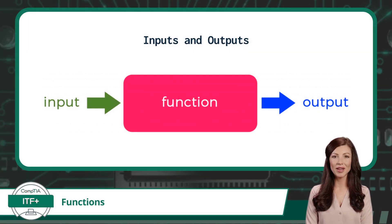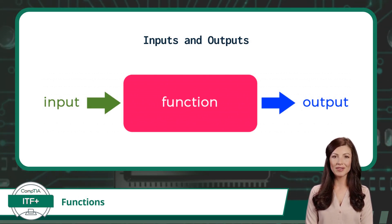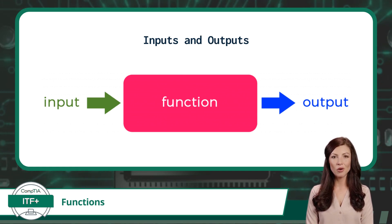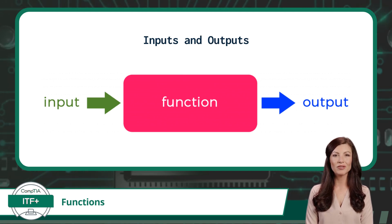Let's explore the input and output aspect of a function. Think about a vending machine. You put coins in — that is your input — then you press a button, and out comes your snack — that is your output. Functions work in a similar fashion. You feed them some data or values as input, they process it, and then they give you back an output.